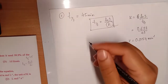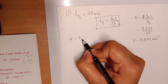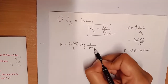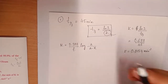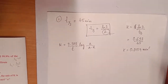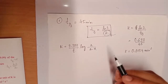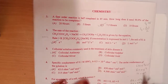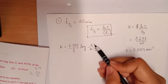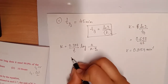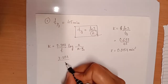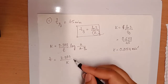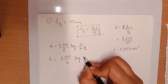As it is a first order reaction, the rate constant formula is K equals 2.303 divided by T, into log of A divided by (A minus X). A is the initial concentration — we take it as 100. In the question they ask how long it needs for 99.9% completion, so X is 99.9%. We substitute T here and K on the other side.